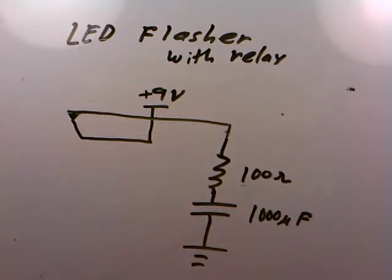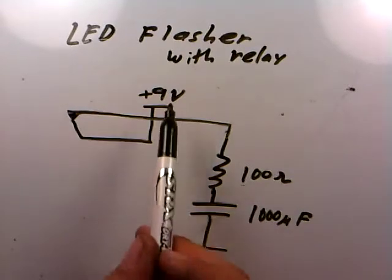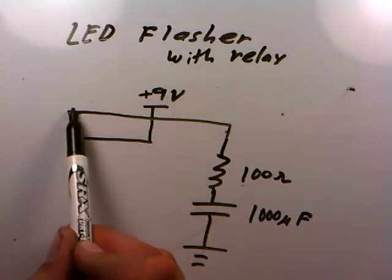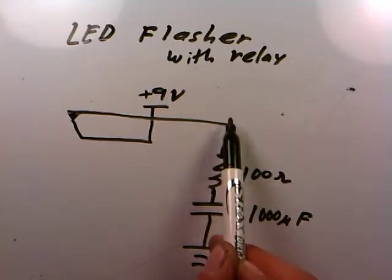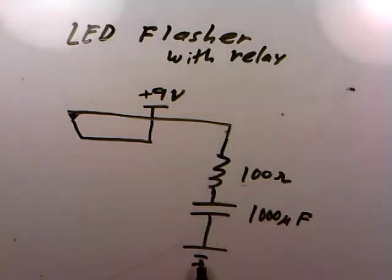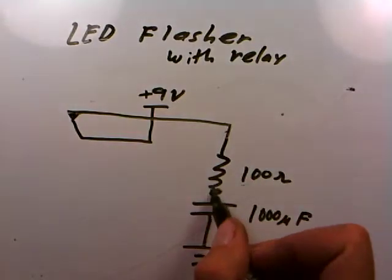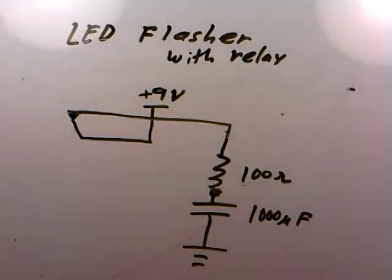If this were all there was to the circuit, when we applied power and turned this thing on, the 9 volts will indeed pump current into the RC circuit and the capacitor will charge. We'll see the voltage at this point gradually rise.